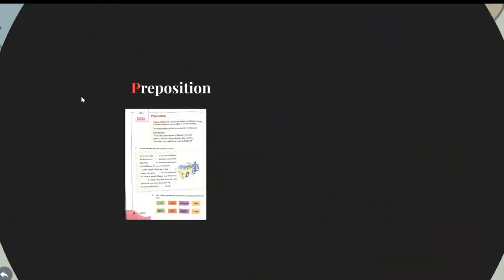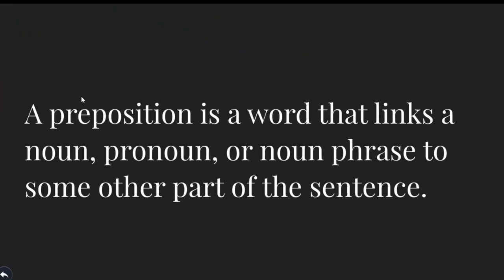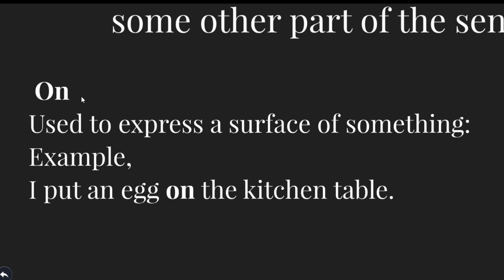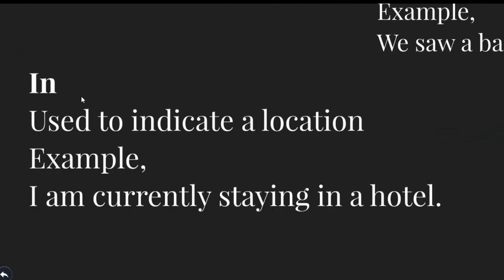Moving to the next page — the topic is prepositions. A preposition is a word that links a noun, pronoun, or noun phrase to some other part of the sentence. 'On' is used to express a surface of something — for example, 'I put an egg on the kitchen table.' 'At' is used to indicate place — for example, 'We saw a baseball game at the stadium.' 'In' is used to indicate a location — for example, 'I am currently staying in a hotel.'